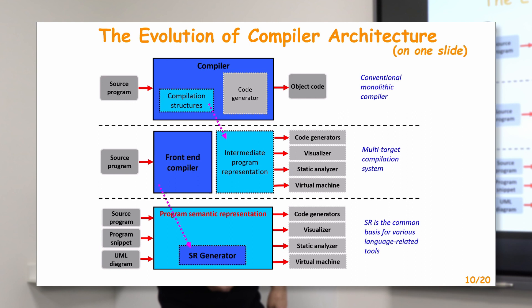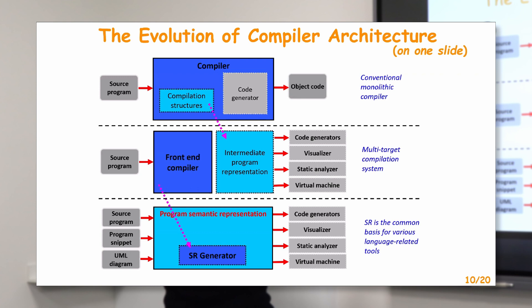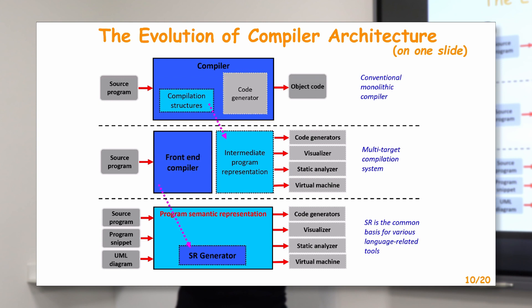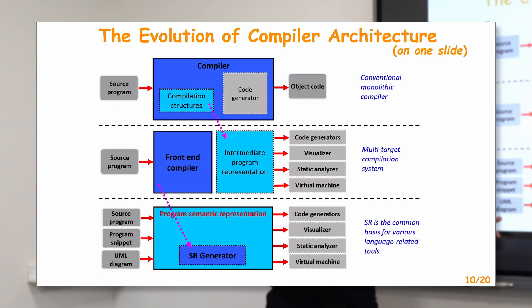Notice the source element. Why should a source program be represented as text? It is a kind of convention we have followed for many years. In general, source code can be represented in different views — it can be just text on paper, a sequence of bytes read from a port, or even a UML diagram. Why not? People design programs using that very popular notation. Why not force such a system to accept the source program in terms of UML diagrams? In general, this might be quite useful and natural.